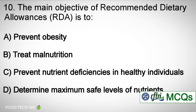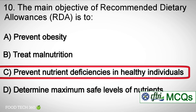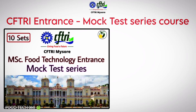Question number ten: the main objective of Recommended Dietary Allowances is to — options: a) Prevent obesity, b) Treat malnutrition, c) Prevent nutrient deficiencies in healthy individuals, d) Determine maximum safe levels of nutrients. Correct answer: c) Prevent nutritional deficiencies in healthy individuals.